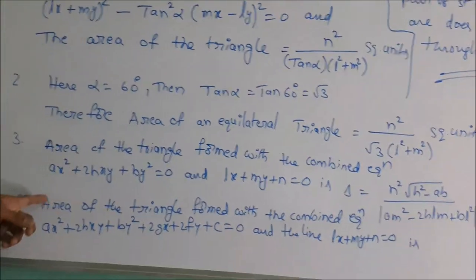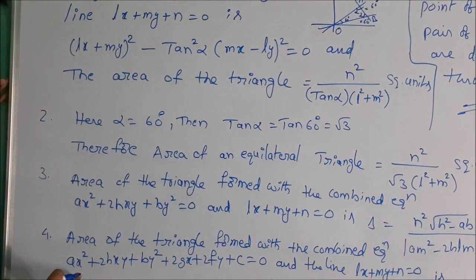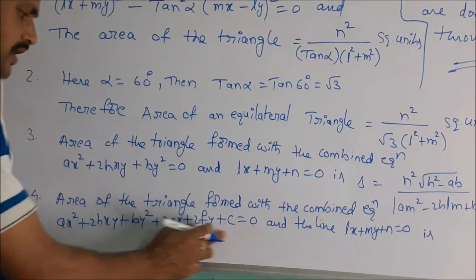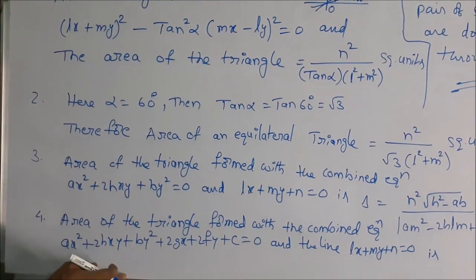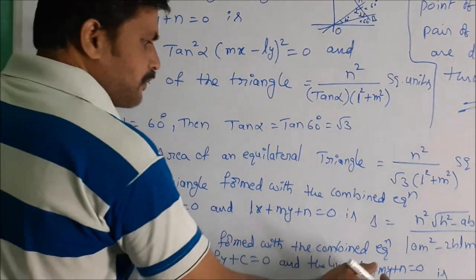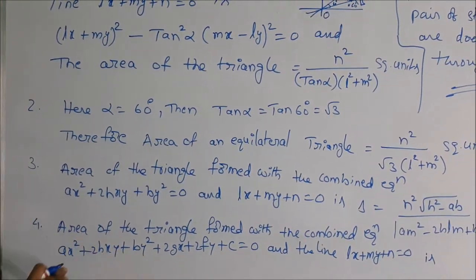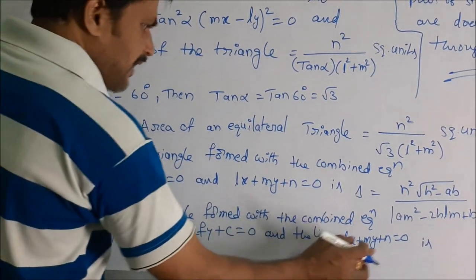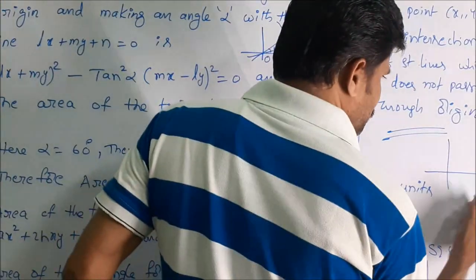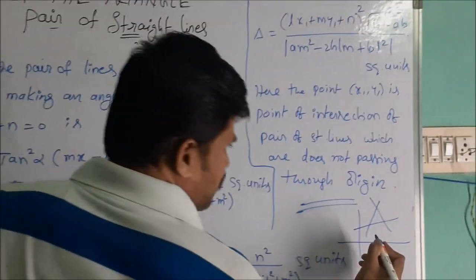Next, the area of the triangle formed with the combined equation ax² + 2hxy + by² + 2gx + 2fy + c = 0, which is a second degree non-homogeneous equation that does not pass through the origin, and the third line lx + my + n = 0. Here the pair of straight lines are two lines and the given third line forms a triangle.